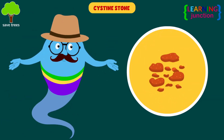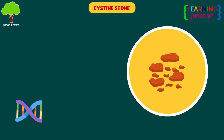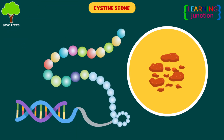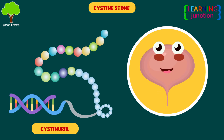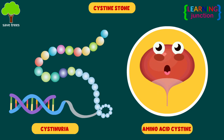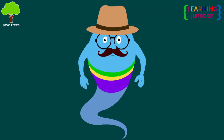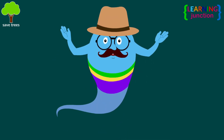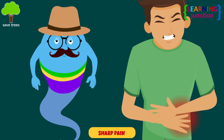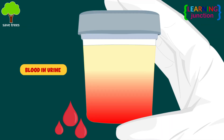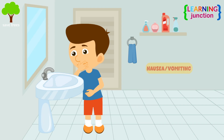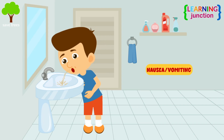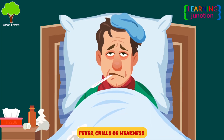Cystine stones are caused by a hereditary genetic disorder called cystinuria, which can lead to excessive amounts of the amino acid cystine collecting in the urine. The most common symptom of kidney stones is sharp pain. Other symptoms include blood in the urine, inability to urinate, nausea or vomiting, fever, chills, or weakness.